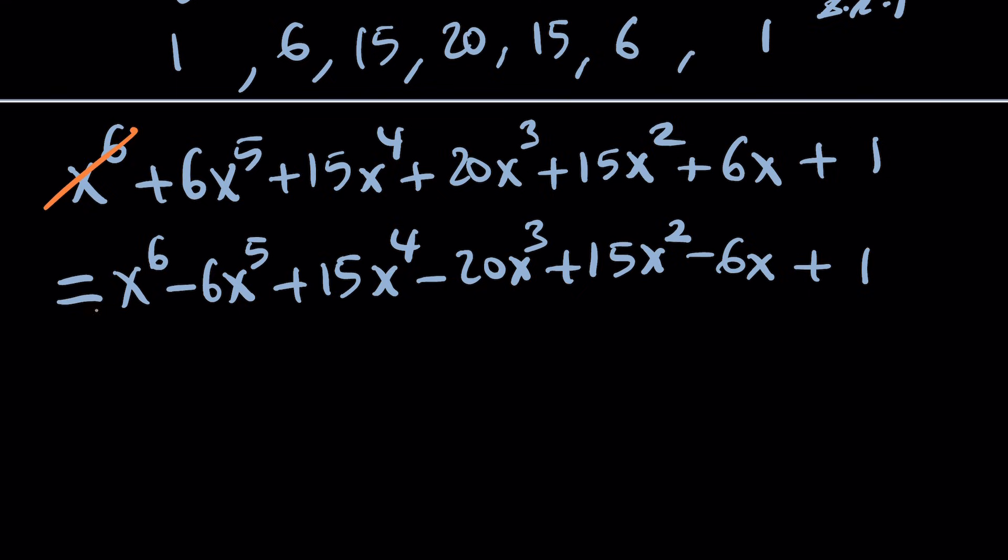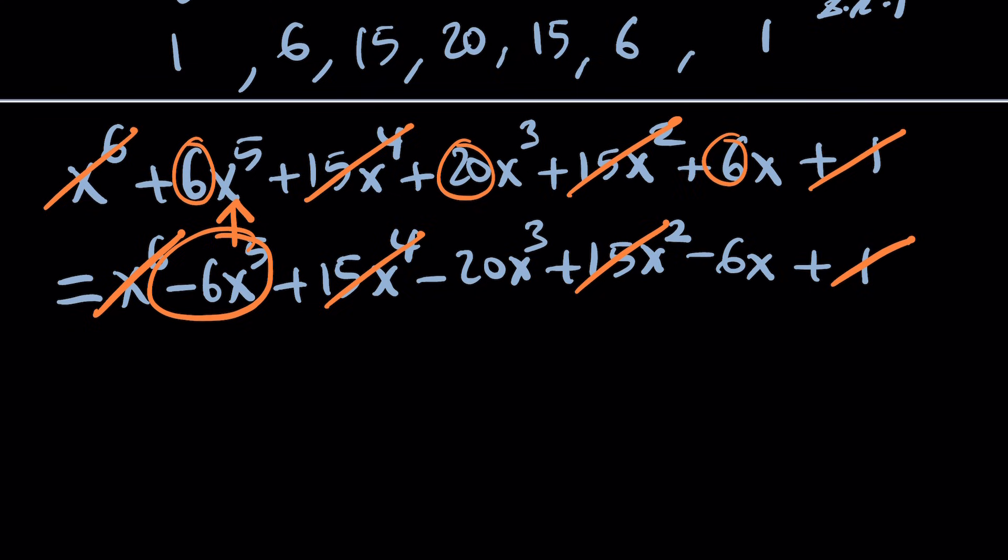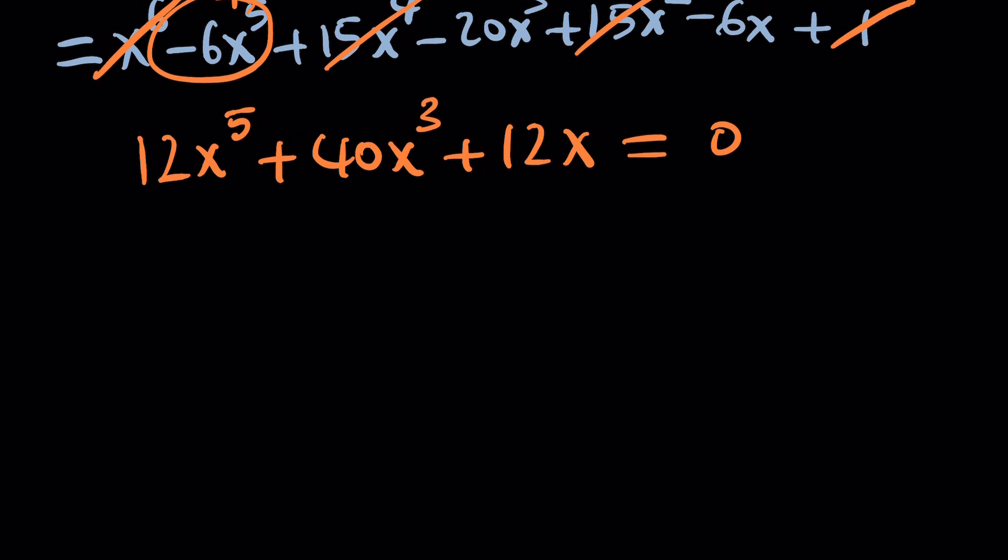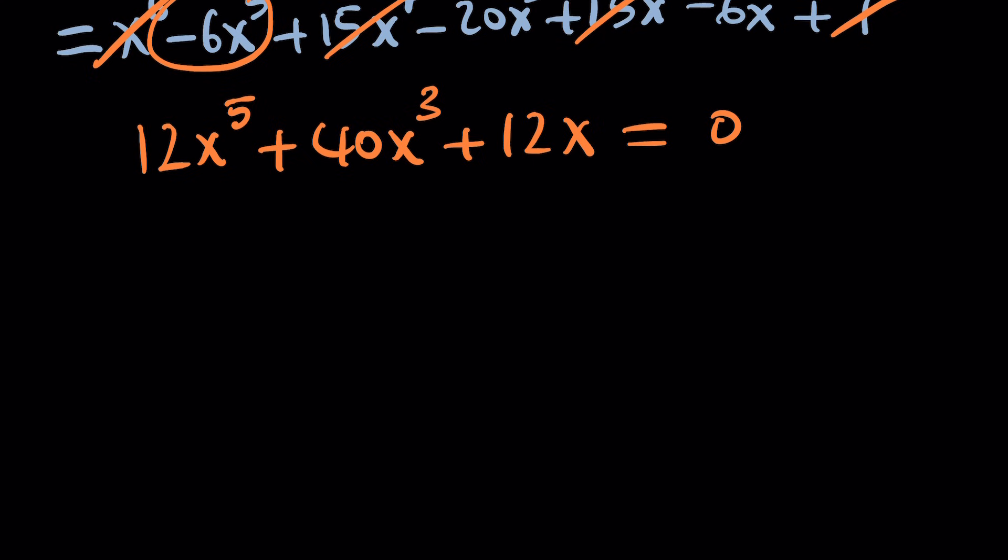x^6 cancels out, and these two cancel out, and these two cancel out, and the 1's cancel out because they are on different sides. Now, we're going to bring everything with an odd power, which means these are all going to be doubled. So you're going to have 12x^5 + 40x^3 + 12x = 0. This is the best quintic, not the best one, but it's pretty good.